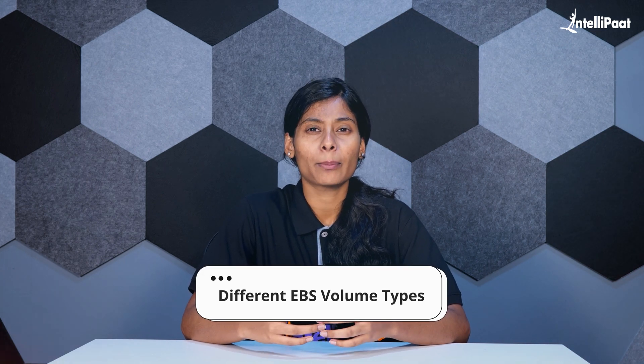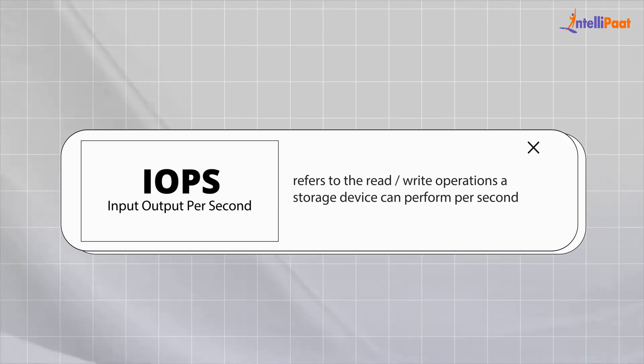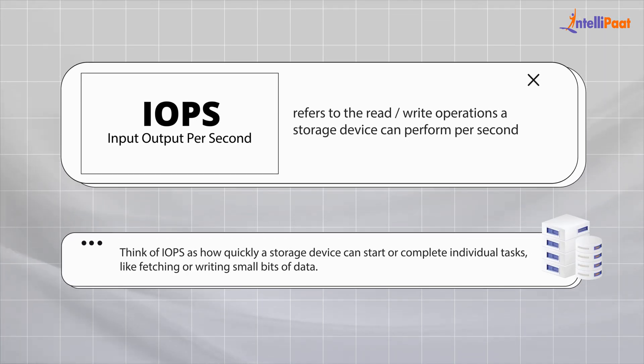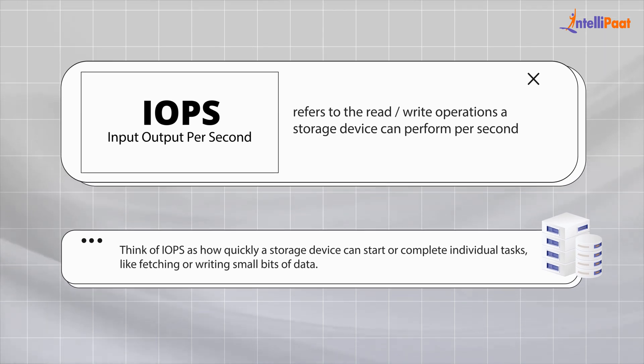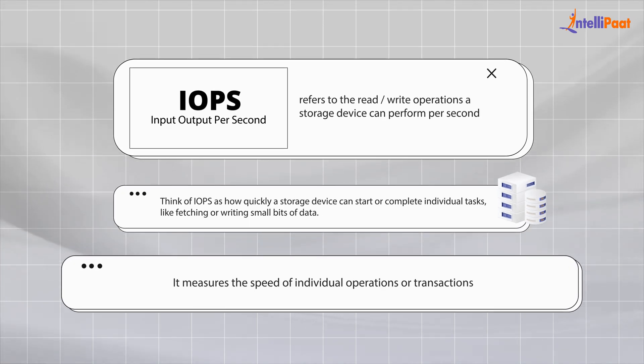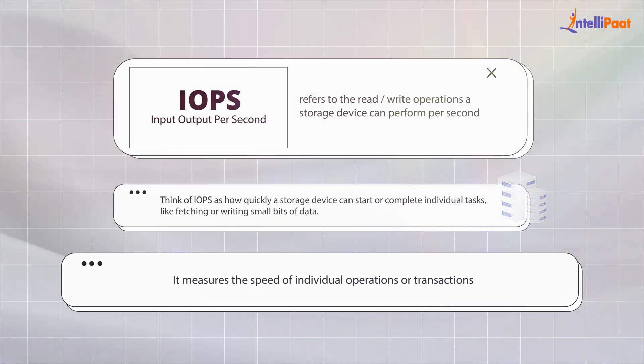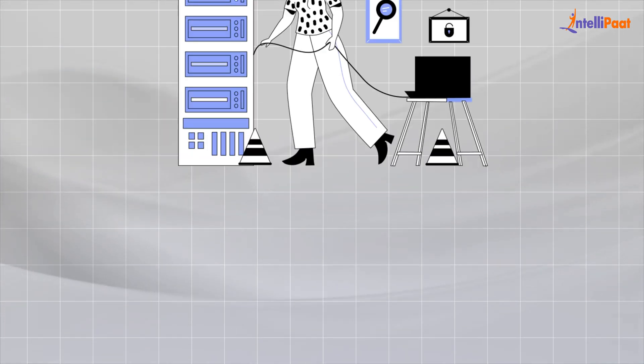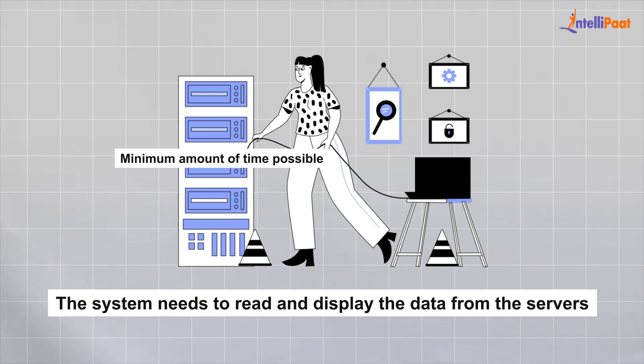Now moving ahead, let's discuss EBS volume types. But first, we need to understand IOPS and throughput. IOPS, or input-output per second, refers to the read-write operations a storage device can perform per second. Think of IOPS as how quickly a storage device can start or complete individual tasks like fetching or writing small bits of data. For example, when browsing an online store to view the latest collection, high IOPS ensures queries are processed quickly, providing faster response time to the user.